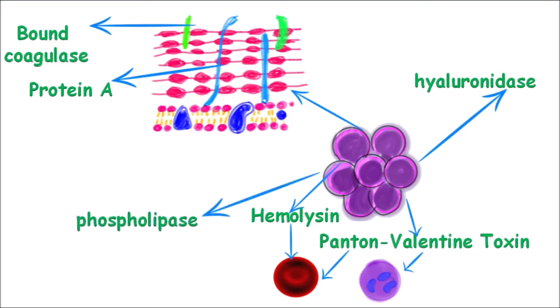Phospholipase secreted by the bacteria helps to break down the phospholipids in the cell membrane and helps to invade the tissues. There is another toxin known as staphylokinase, which breaks down clots and helps the bacteria spread by metastasis to other organs.